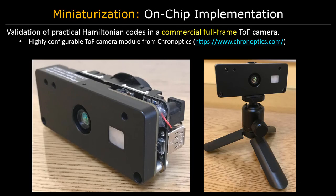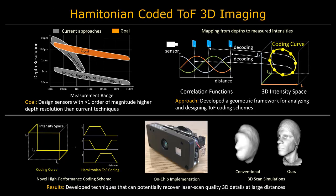The next step in this line of work is to evaluate our proposed codes in a commercial time-of-flight camera. In summary, we have developed a geometric framework for analyzing and designing time-of-flight coding schemes. This framework enabled the design of Hamiltonian codes, which achieve higher depth precision than conventional codes. Furthermore, we demonstrated that Hamiltonian codes can be realized even under strong hardware constraints. When implemented in a commercial time-of-flight camera, this new family of coding functions will increase their depth resolution without affecting power consumption, total exposure time, processing time, and spatial resolution.